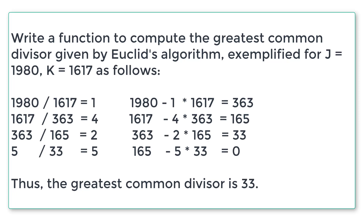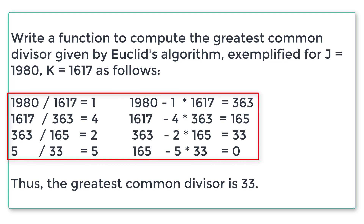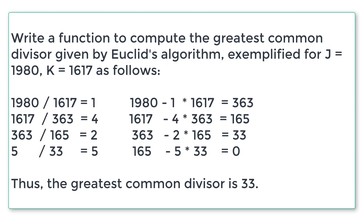We have a problem statement here. Write a function to compute the greatest common divisor given by Euclid's algorithm, exemplified for j equal to 1980 and k equal to 1617. They have even given us the calculation part and the result — the greatest common divisor is 33.